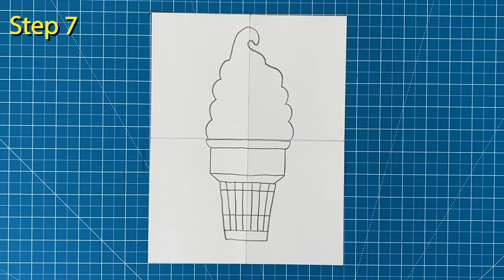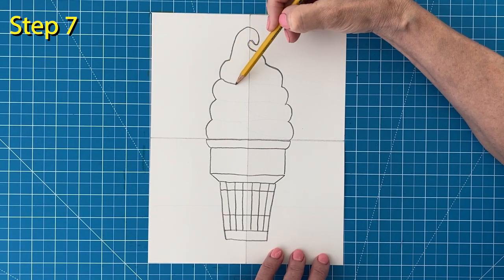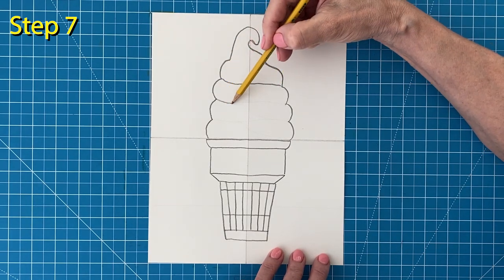Step number seven. Now you can connect the points from the left to the right with a very gentle curvy line.